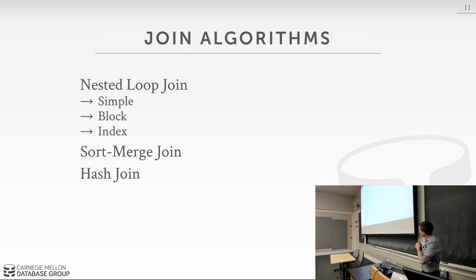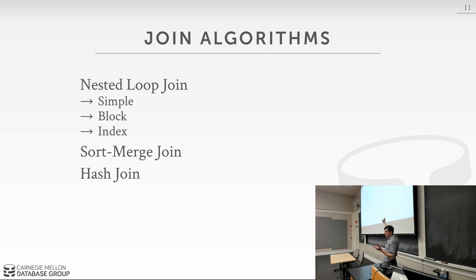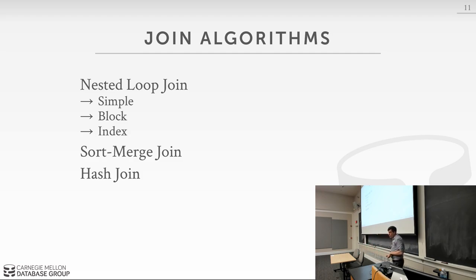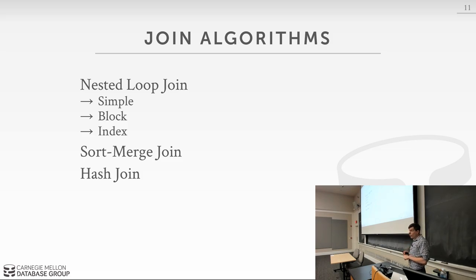At a high level there are three classes of join algorithms: nested loop join, sort-merge join, and hash join. We'll spend most of our time talking about hash join, but it's good to understand the others because there may be different scenarios where you want one versus another. For example, index nested loop join is almost always what you want for OLTP workloads because you'll have an index available. The main spoiler: hash join is always going to be fastest.